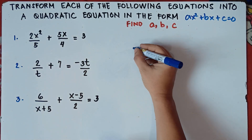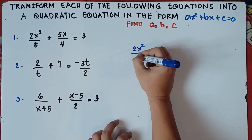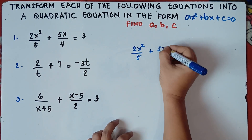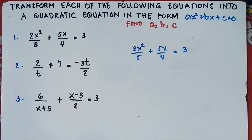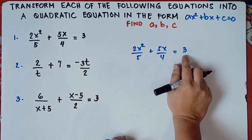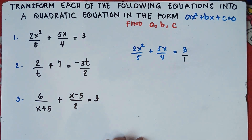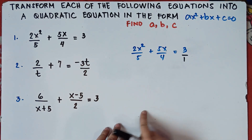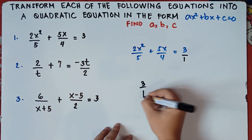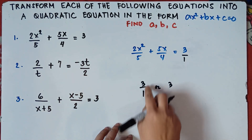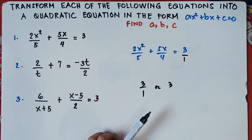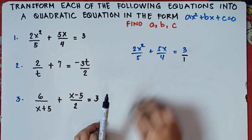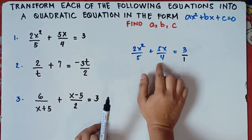Let's answer number 1: 2x squared over 5 plus 5x over 4 equals 3. For the 3 here, understood that there is a denominator of 1, because 3 over 1 is the same as 3. Now we need to find the least common multiple of 5, 4, and 1.